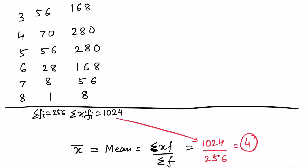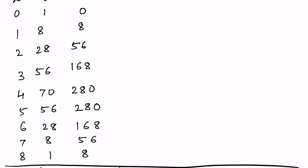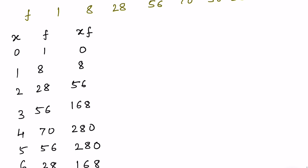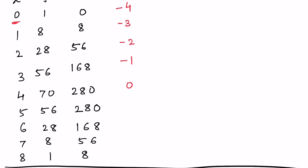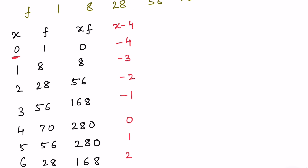Since the mean is 4, we need to find the moment about 4. Let us find the values of (x − 4): 0−4=−4, 1−4=−3, 2−4=−2, 3−4=−1, 4−4=0, and then 1, 2, 3, 4.